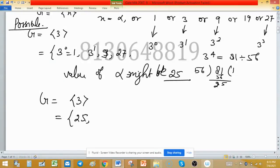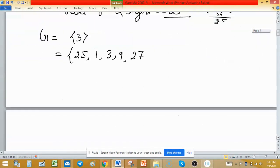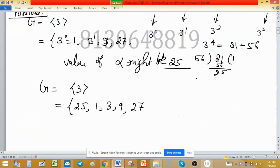The elements are 25, 1, 3, 9, 27, and one element is remaining: 19. So 19 will be generated by which power? Since 3^4 is 81, now 3^5 is 81×3.